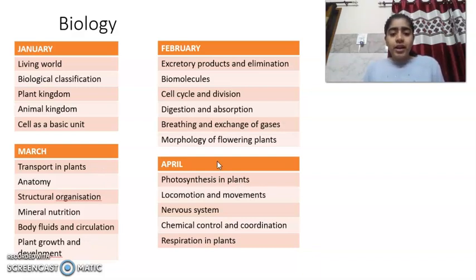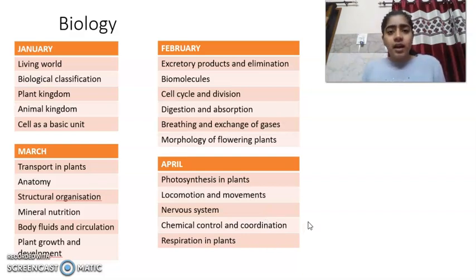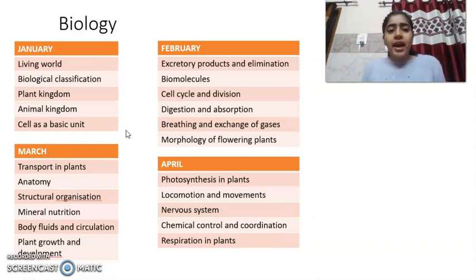In April, you have to do Photosynthesis, Locomotion and Movements, Nervous System (Neural Control and Coordination), Chemical Control and Coordination, and Respiration in Plants. By covering these chapters in January, February, March, and April, you will be able to complete the whole of Biology.